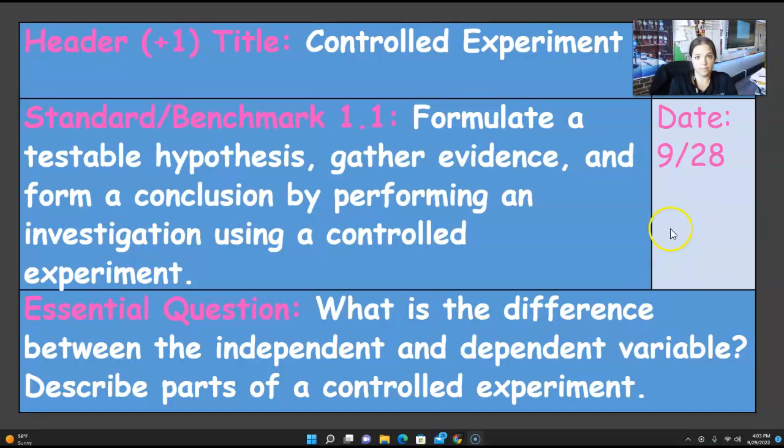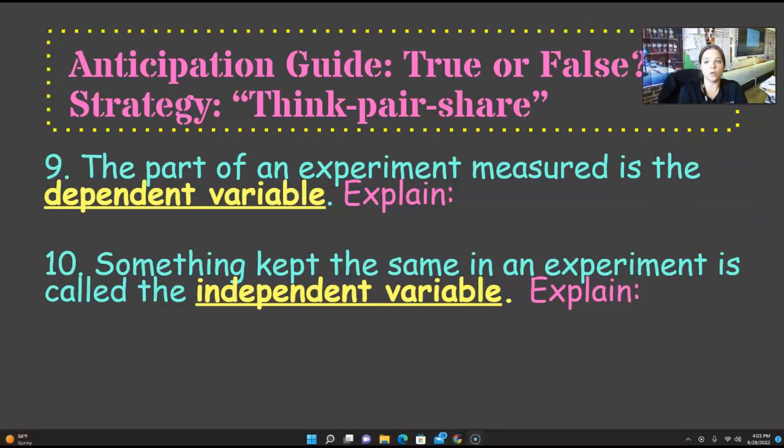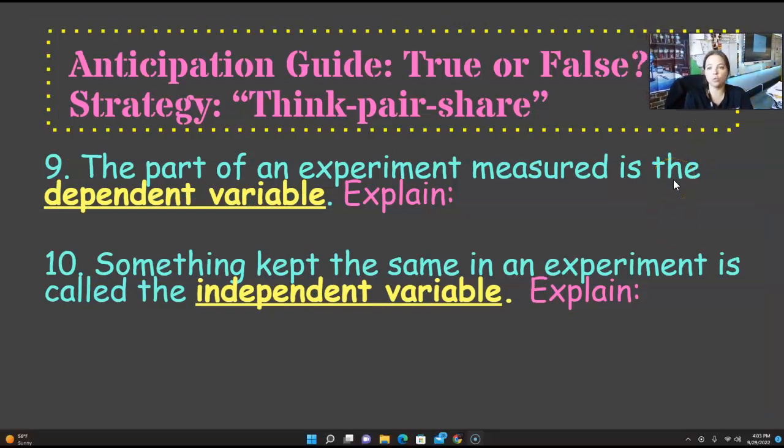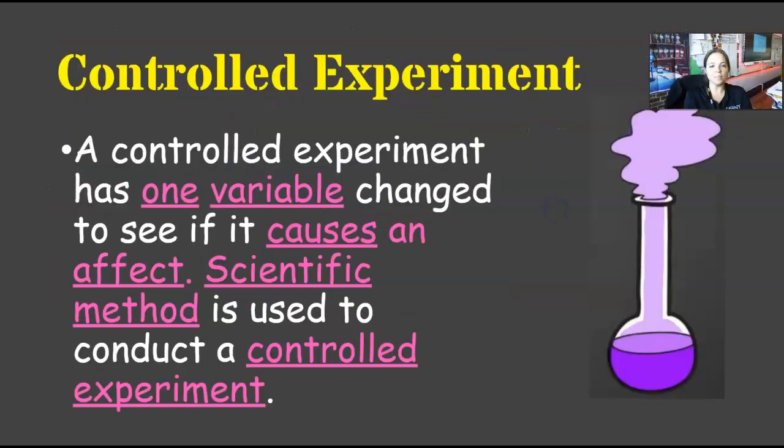We did this on the 28th. So first off, we're going to look at this real quick. Page 2, it's the anticipation guide. Remember, we already did this. Part of the experiment measured is the dependent variable, true or false. Number 10, something kept the same in the experiment is called the independent variable. True or false. That one was on the left-hand side, the right-hand side for after we're done.